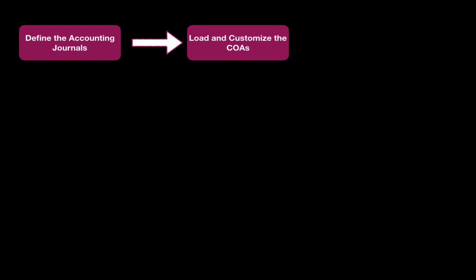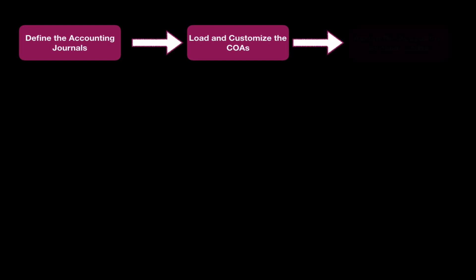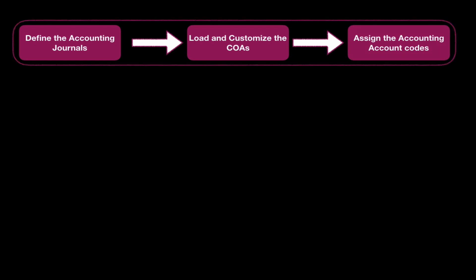After defining your accounting journals and customizing and finalizing the chart of accounts, you need to assign the accounting account codes. You will go to your customers and assign them the codes of the accounting accounts you created — for your vendors, your products, your bank accounts, and everything. In this phase you have created the accounts, created the codes, and assigned the codes to your business elements.